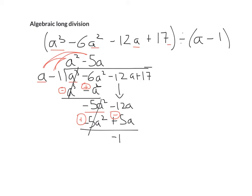The next step is we bring down our 17. Then we go back to the start again, and we say, what do I multiply a by to get -17a? And that's going to be -17.